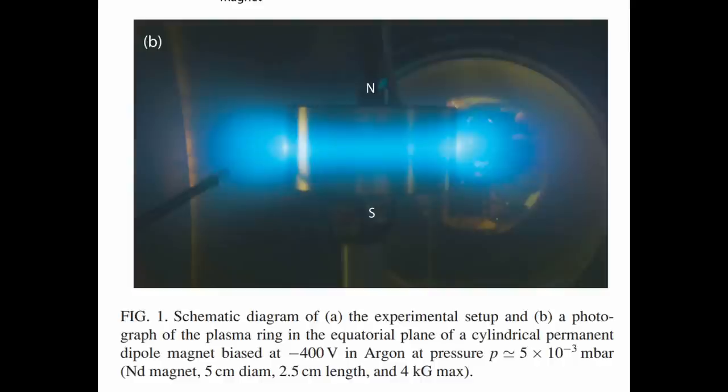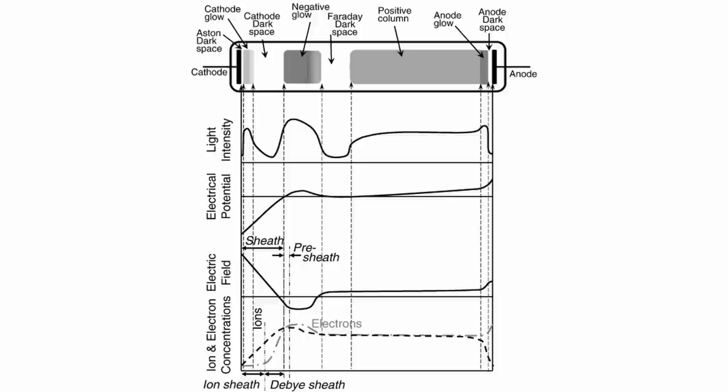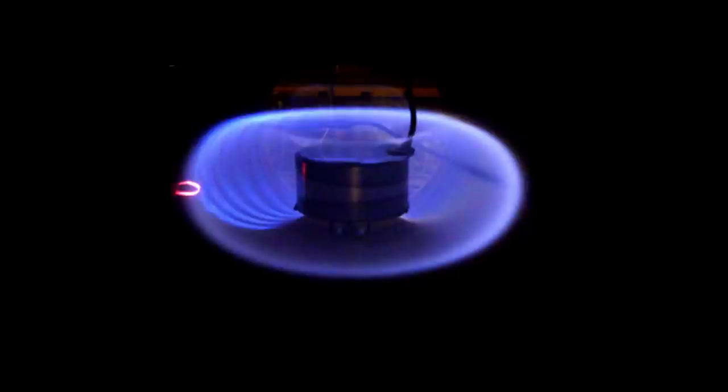Electrons perform an E-cross-B drift and both ions and electrons are energized near the cathode. Since the magnetic potential is much lower than the measured potential, there must be a thin cathode sheath. Ions created at the sides of the disc are accelerated into the disc towards the cathode.